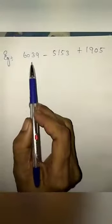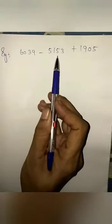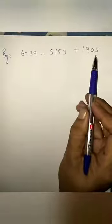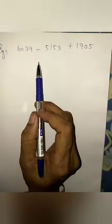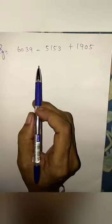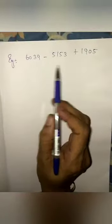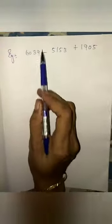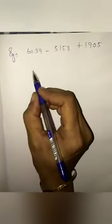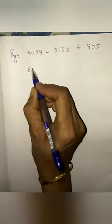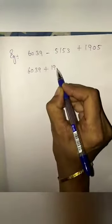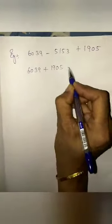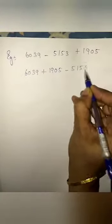For example: 6039 minus 5153 plus 1905. If we have been given subtraction and addition together, what we have to do is first arrange the numbers of the same sign together. If there is no sign before a number, it carries the sign of addition. So we rewrite it as: 6039 plus 1905 minus 5153.